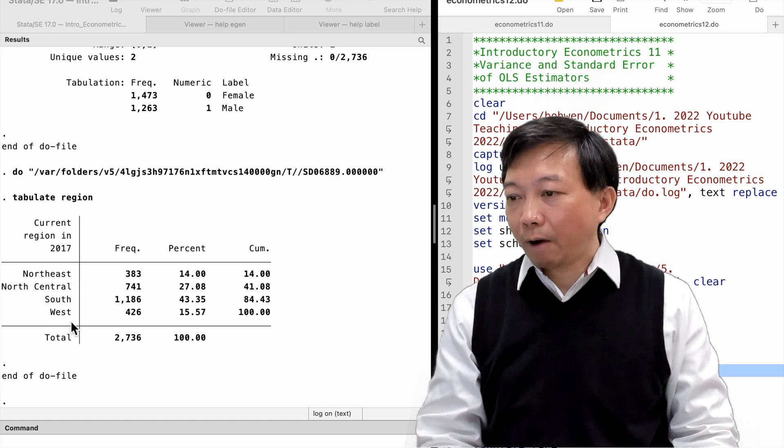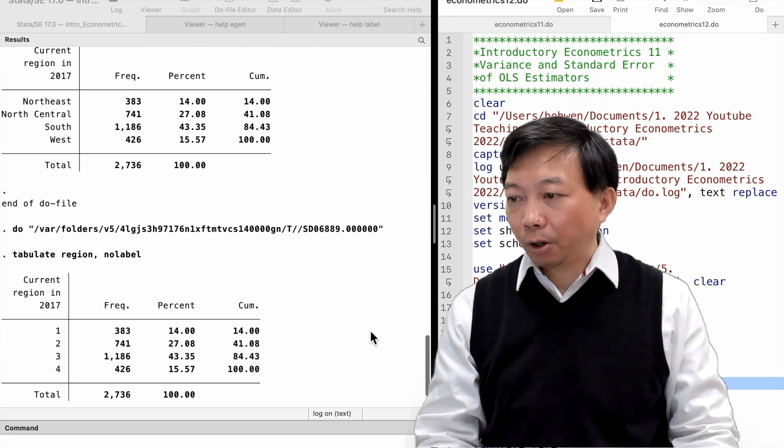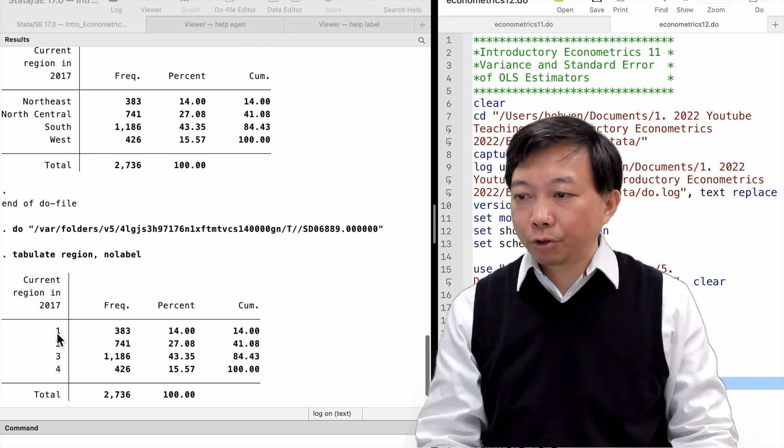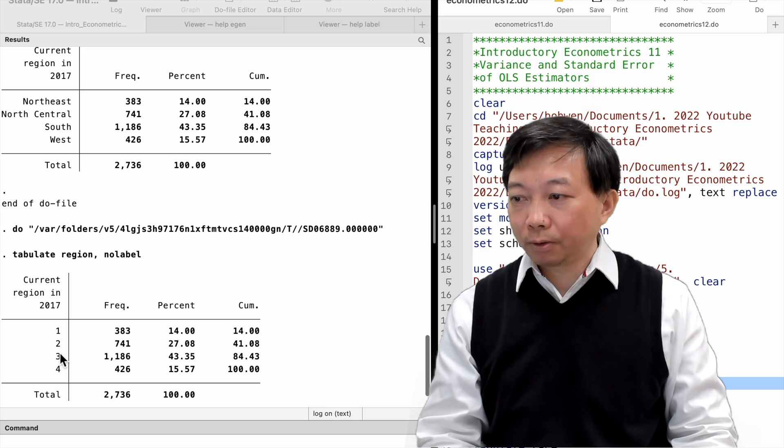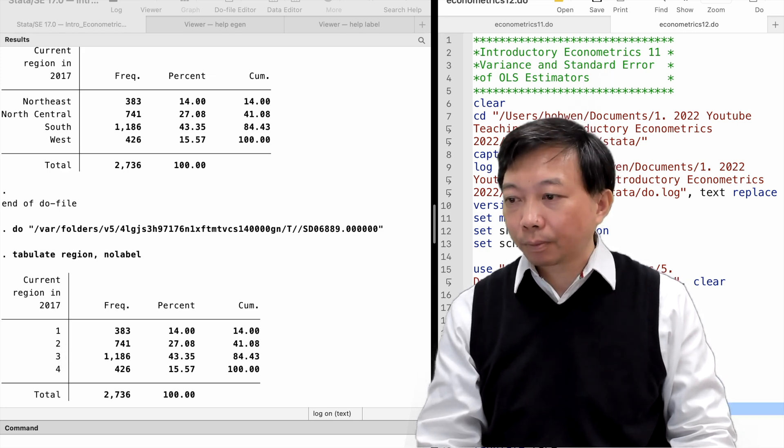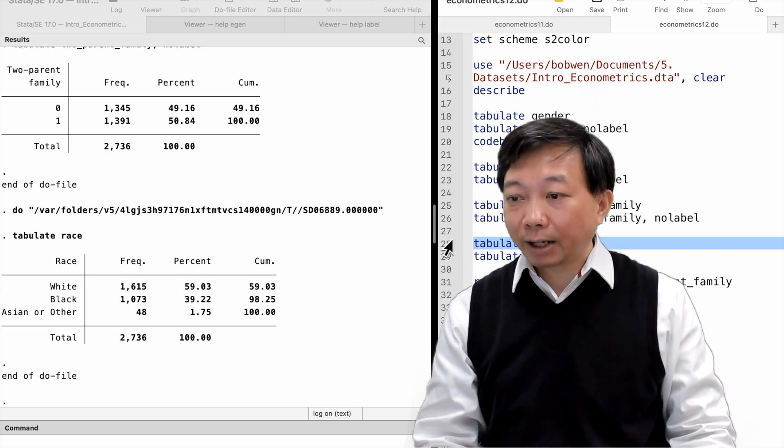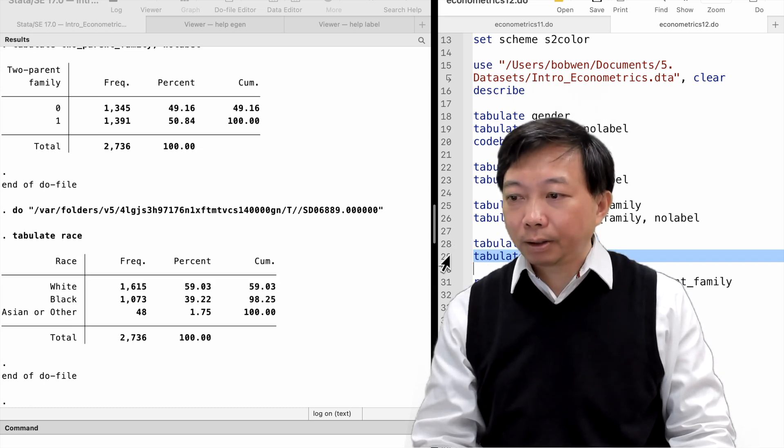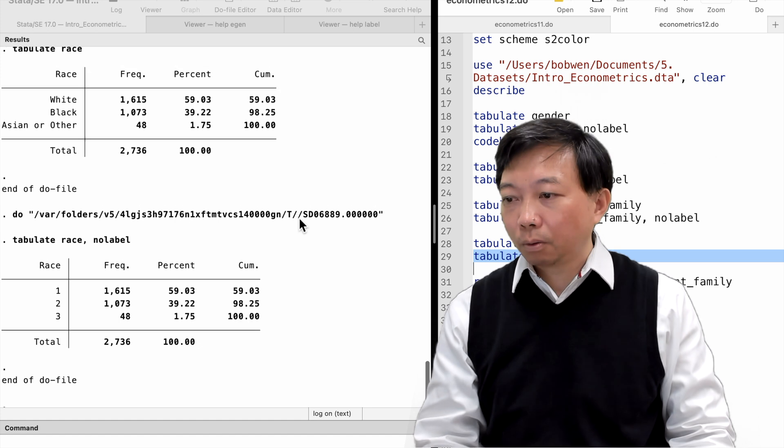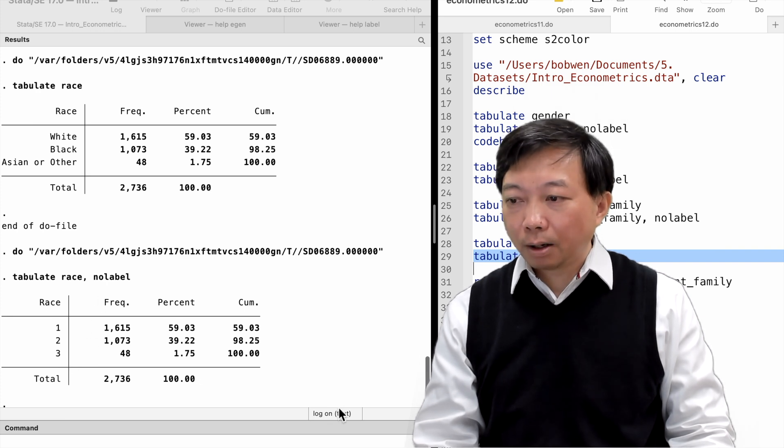We find the variable region a categorical variable. Four categories represent four regions in which the respondents lived in 2017 at the time of the interview. The variable race is another categorical variable. It takes on three values 1, 2 and 3 corresponding to white, African-American and others.